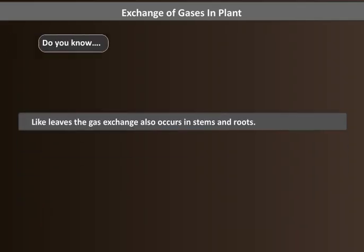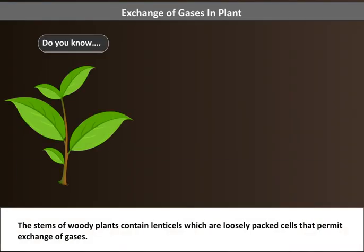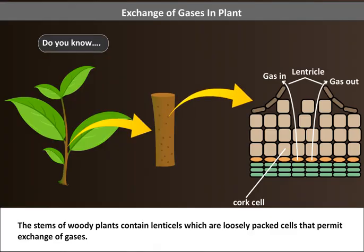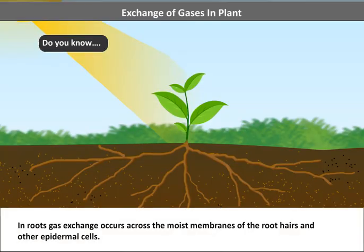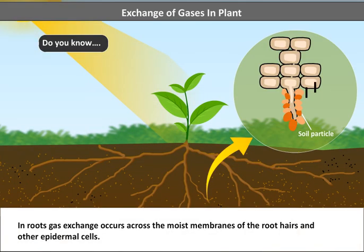Like leaves, gas exchange also occurs in stems and roots. The stems of woody plants contain lenticels, which are loosely packed cells that permit exchange of gases. In roots, gas exchange occurs across the moist membranes of the root hairs and other epidermal cells.